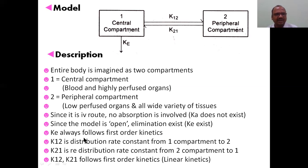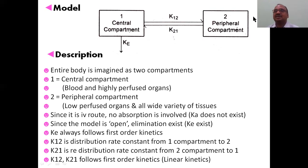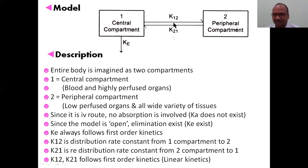Since this is an open model, elimination exists and ke is always first order. There is one more term not present in the one-compartment model: k12, which is the distribution rate constant — the rate at which drug moves from the central compartment to the peripheral compartment. After some time, the drug comes back to the central compartment; this is called k21, the redistribution rate constant. Both k12 and k21 follow first-order (linear) kinetics.